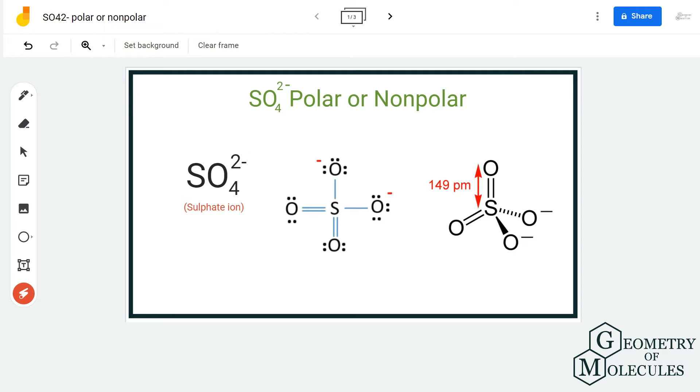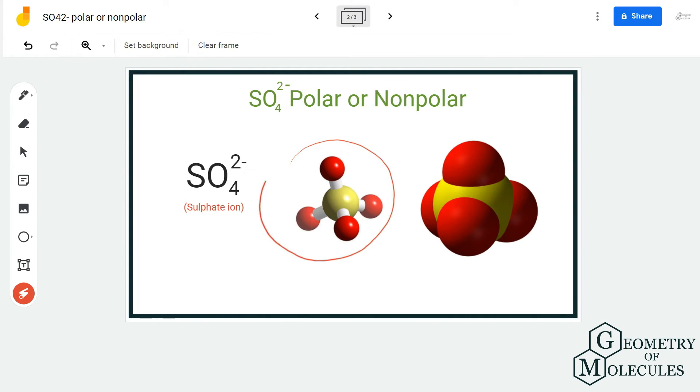The molecule has tetrahedral geometry as four atoms of oxygen are arranged like this in SO4 2-. As the shape is quite symmetrical, there are very low chances of polarity in this molecule.